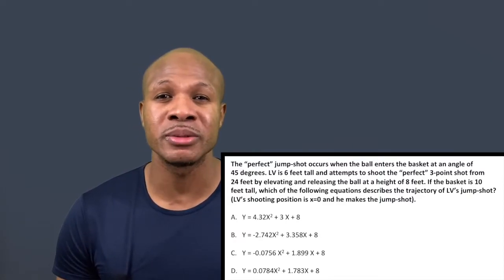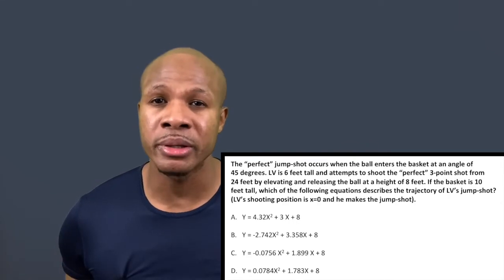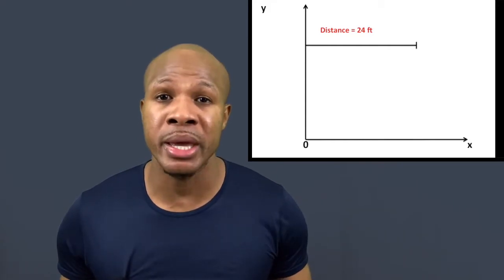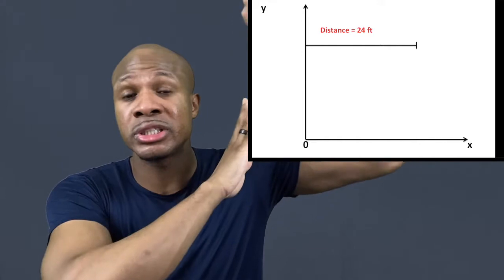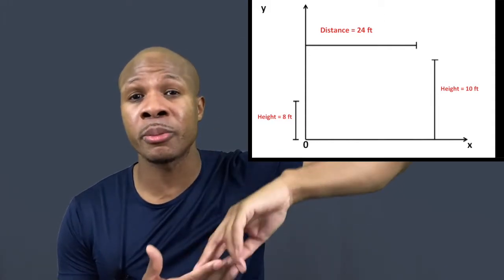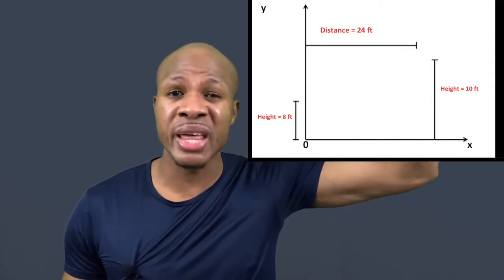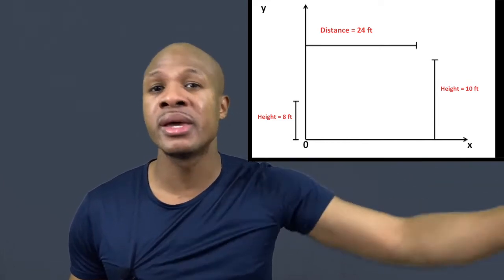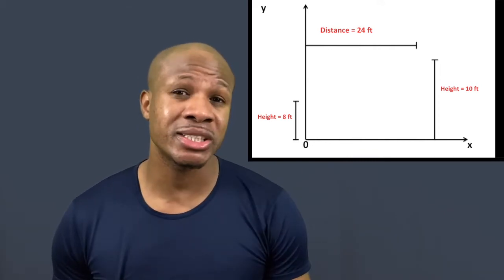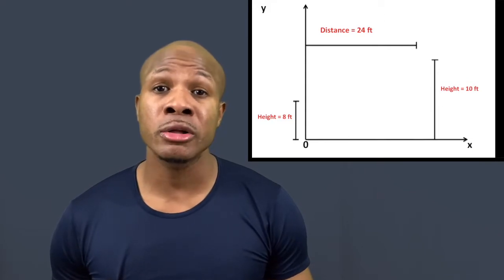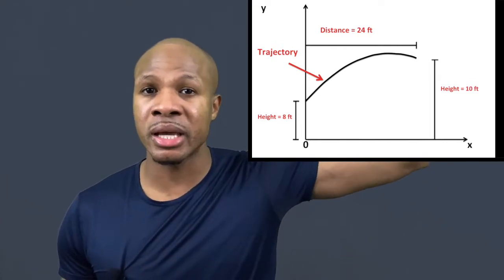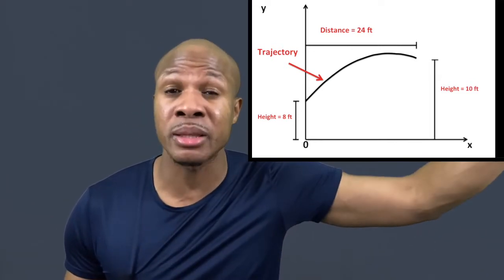Let's make sure we understand the problem. LV is 24 feet from the basket — standard three-point shot in the NBA. He elevates, shoots the ball, and releases it when his hands are eight feet off the ground. The ball travels and dives into the basket, which is 24 feet away and 10 feet tall. Trajectory is just the path the ball follows — like a curve — when it leaves your hands and travels toward the hoop.